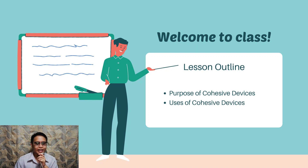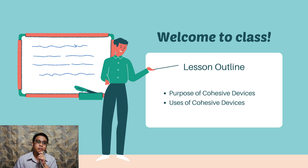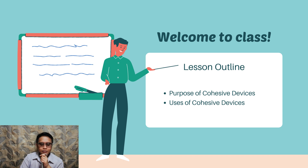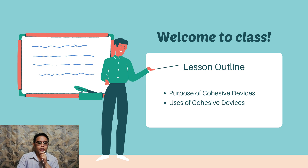Here is our lesson outline. First, we will be talking about the purpose of cohesive devices — what is their purpose. Next, the uses — what are cohesive devices used for. And let me go first to what we call transition signals, which are cohesive devices.